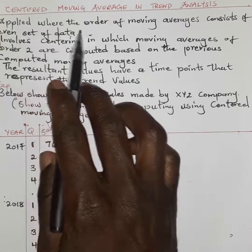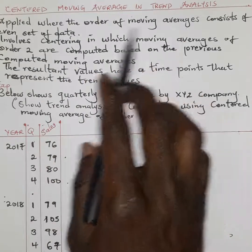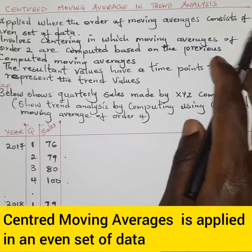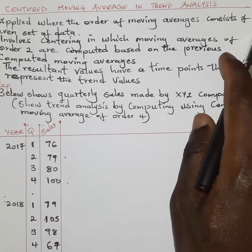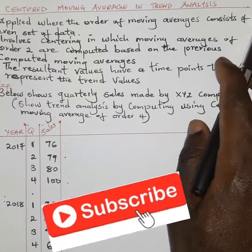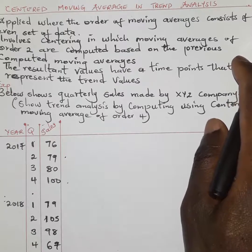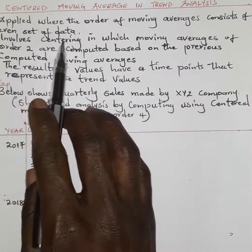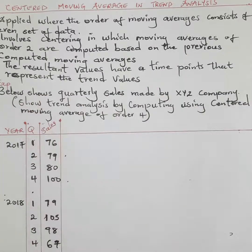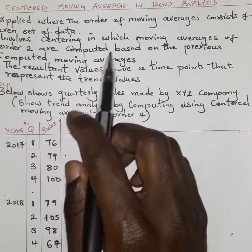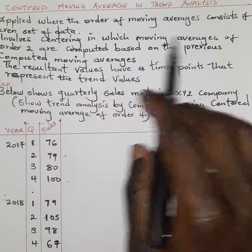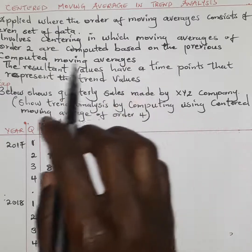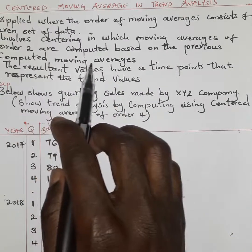Centered moving averages in trend analysis apply when the order of moving averages consists of an even set of data. When you have an even set of data, it is not easy to approximate the mean for that particular data. In this case, we involve a process known as centering, whereby moving averages of order two are computed based on the previously computed moving averages.